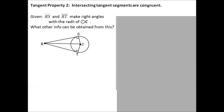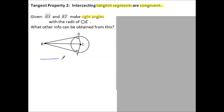Let's move on to our next property. Tangent property 2: intersecting tangent segments are congruent. And here we have this picture, and we're going to use this to prove that that is actually the case. Given RS and RT make right angles with the radii of circle C, what other information can be obtained from this? So let's set up a proof.